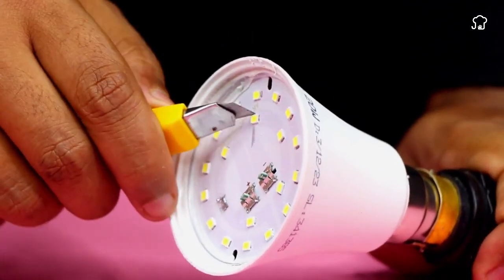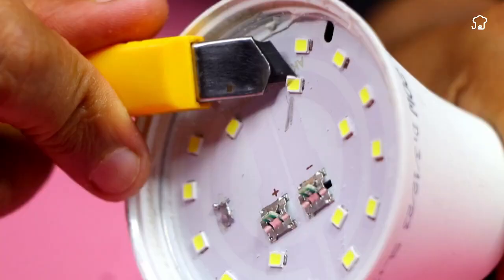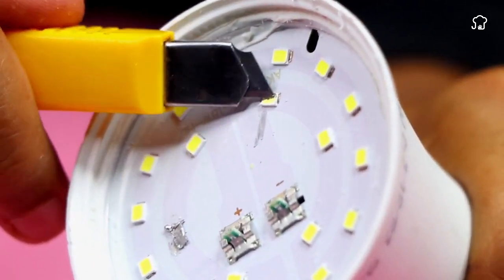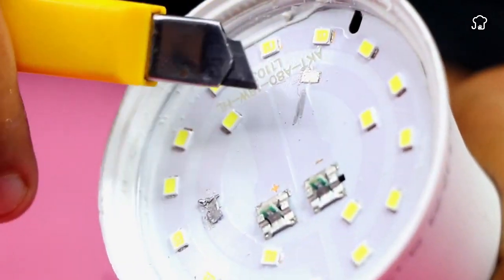Next, we'll use a cutter to carefully remove the defective filament. This step requires precision and care so as not to damage other components of the lightbulb.